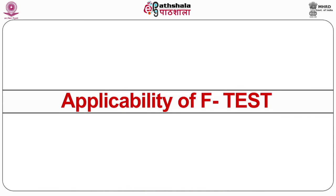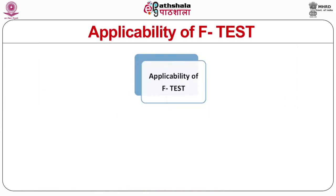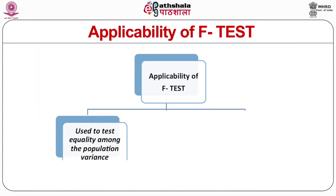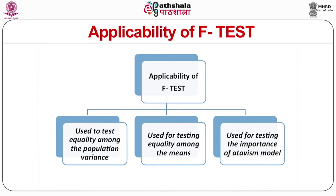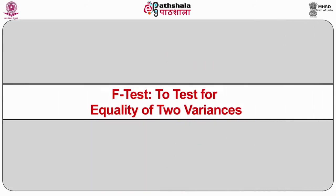Regarding the applicability of the test: first, it is used to test the equality among population variances — to test if there exists any equality among two population variances. Second, this test is used for testing equality among the means, carried out with the help of ANOVA. Third, it is used for testing the significance of a regression model. Further, the F-Test is also used to test for equality of two variances.